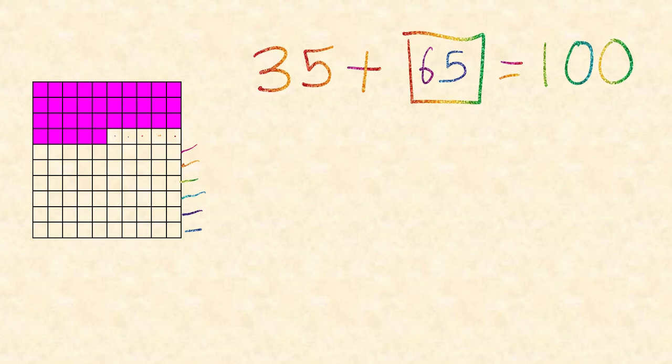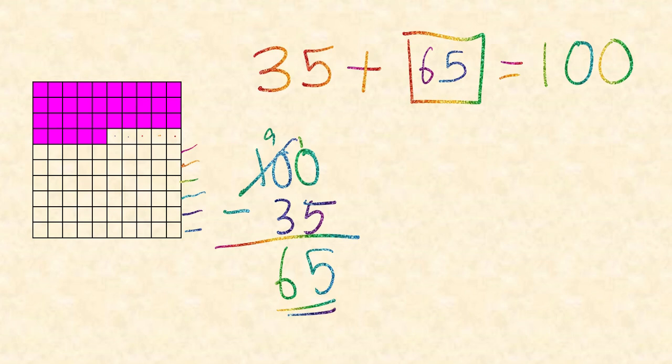Now, I can use the same method. What I did here was I took out the 35 from 100. So how do I translate it into a number sentence? I just do this: 100 minus 35. Let's try it. So, 10, give 1 to your friend. 10 minus 5 is 5. 9 minus 3 is 6. Isn't that simple?